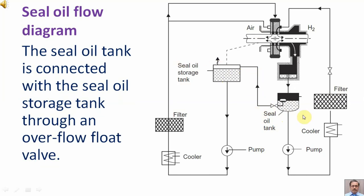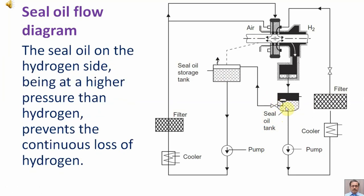An oil tank is connected with the seal oil storage tank through an overflow float valve. The seal oil on the hydrogen side, being at a higher pressure than hydrogen, prevents the continuous loss of hydrogen.